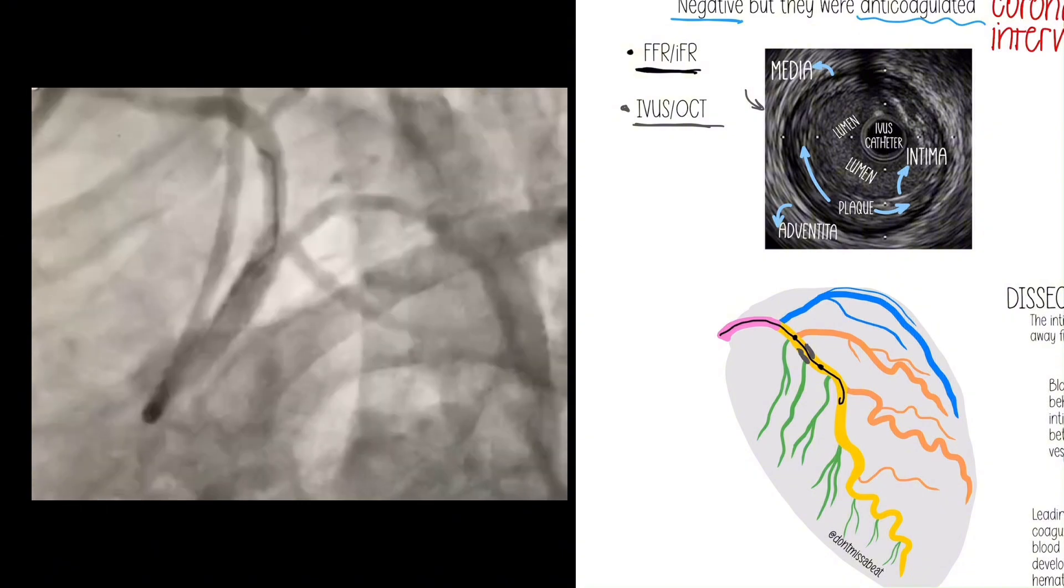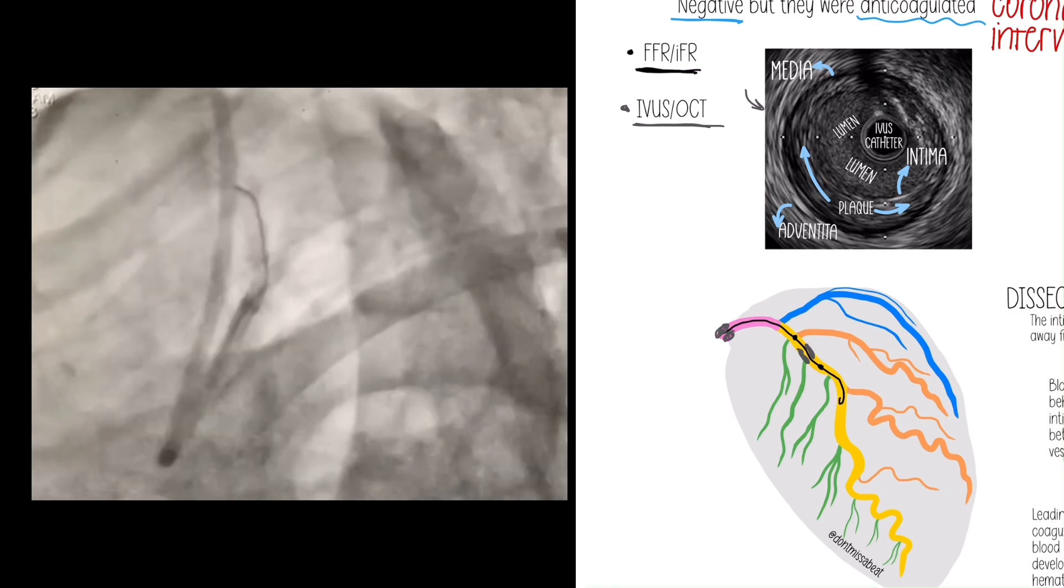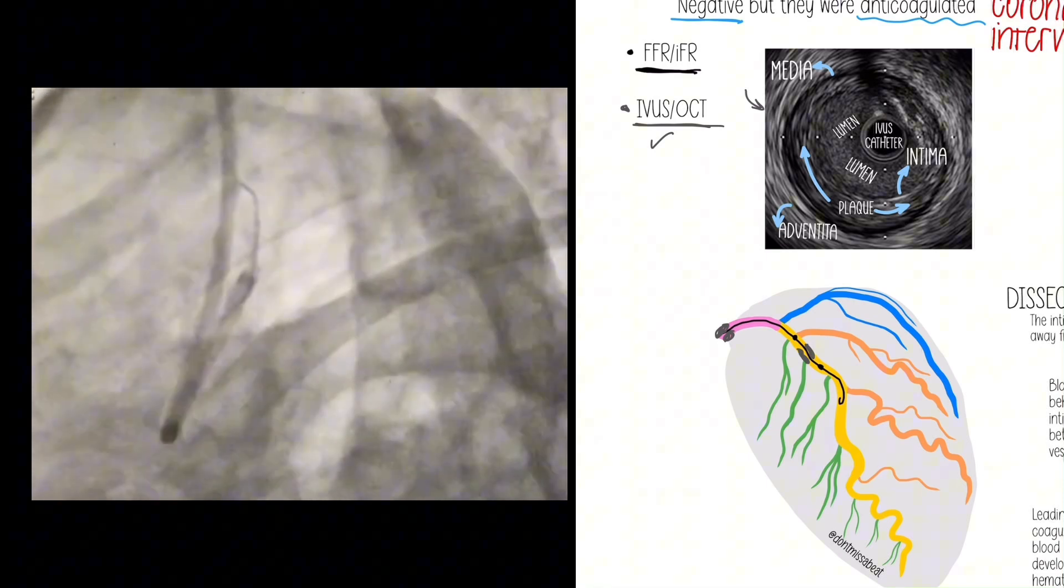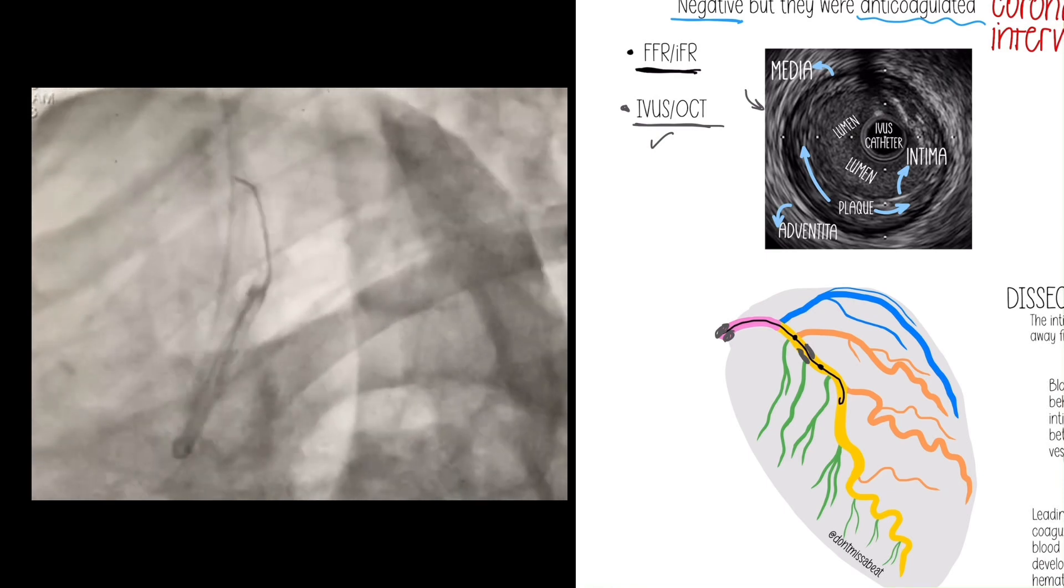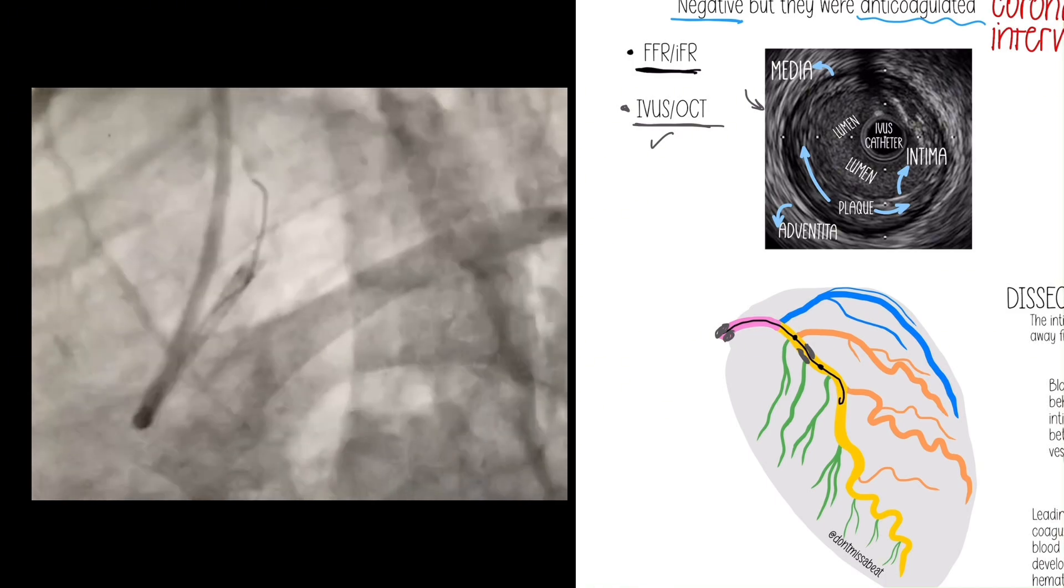Let's say someone had a really severe left main lesion. We might not be stenting it. It might be positive, they might have severe disease, but they're actually going to go for a bypass consult. But the same idea: we put a wire in the coronary to be able to see that, so they were anticoagulated but they didn't receive a stent.